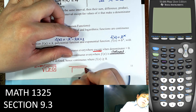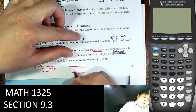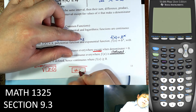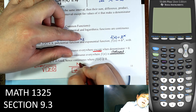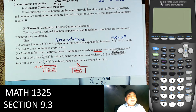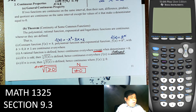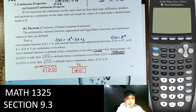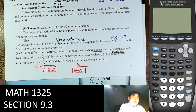If we have something on the bottom, it cannot equal zero. If we have zero over zero, that is still undefined — unless we're talking about limits, where zero over zero is indeterminate. But in terms of the function itself, dividing by zero is undefined, therefore not continuous.